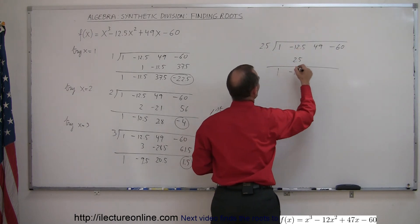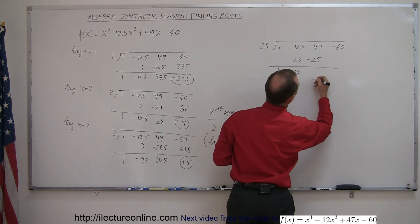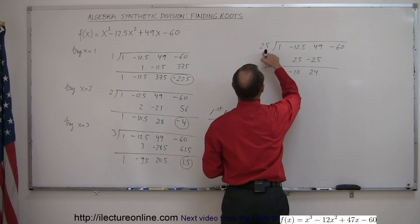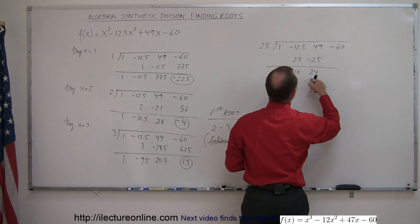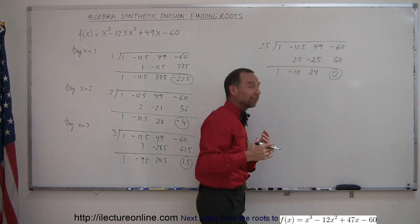Minus 10 times 2.5 is minus 25. Add those together, that gives you a positive 24. 24 times 2.5, and look at that. I think I got real lucky on this one, and when I add together, I get zero. I actually did find the root.